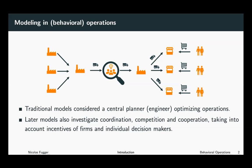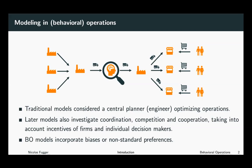However, the humans considered in these models were very simple-minded in the sense that they were very much like Scrooge McDuck. Scrooge McDuck only cares about increasing his monetary wealth. He doesn't care about others, and he takes his decisions completely rationally. This is where behavioral operations departs from these models.